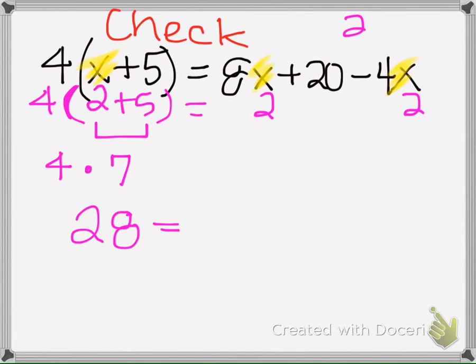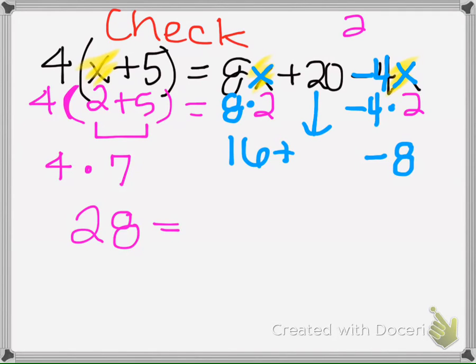Now we're going to come over here on the right side. So we have an 8 next to an x, that means multiply. So we get 16 here. And then here we have a negative 4 next to this x, so that means multiply. So negative 4 times 2 is negative 8.